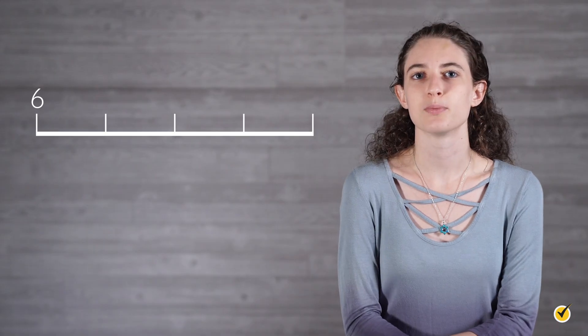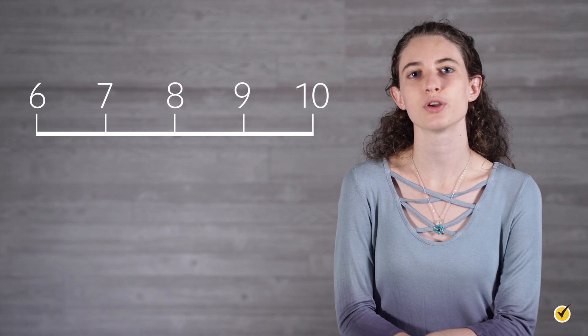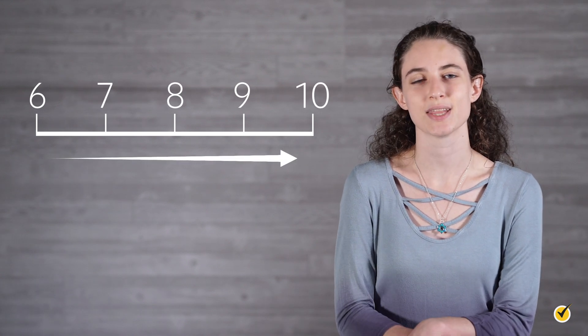On a number line, addition is represented by jumps to the right in the positive direction. Each jump to the right represents the addition of 1 unit. So in this example, we would be starting at 6 and jumping 4 units to the right. We can see that we land on 10.